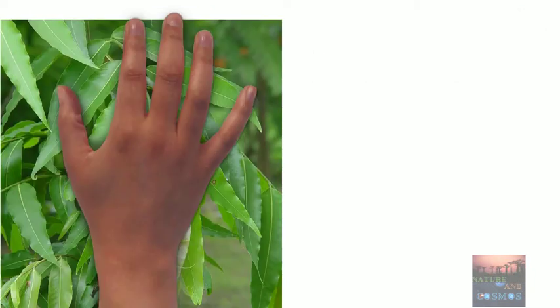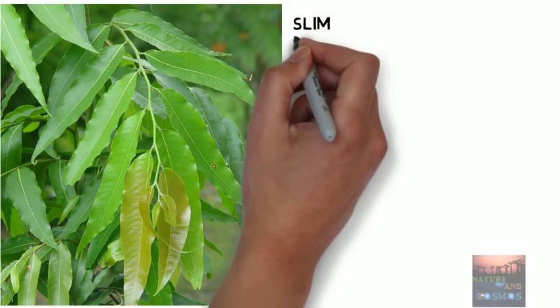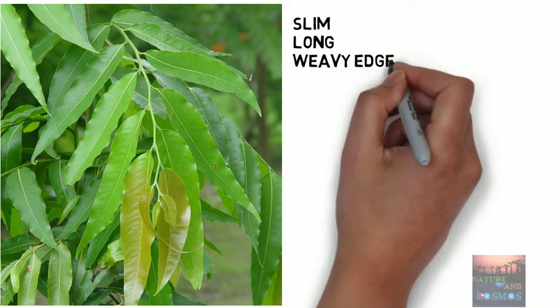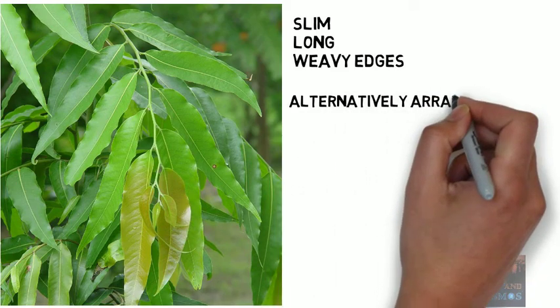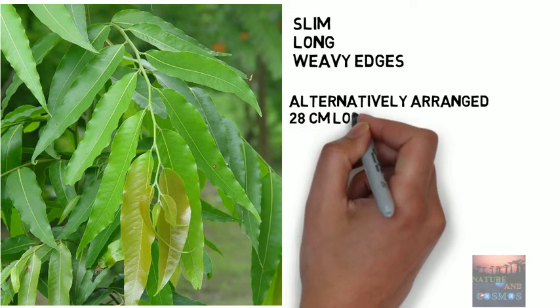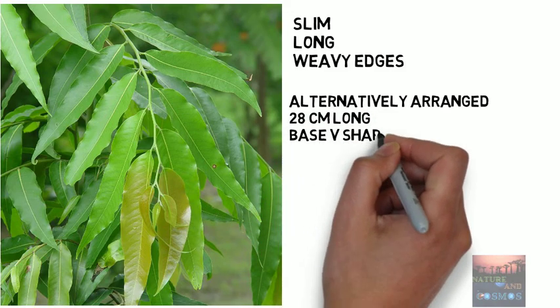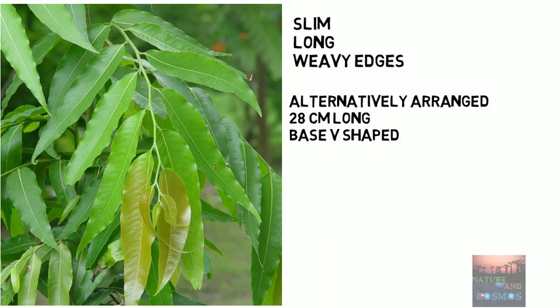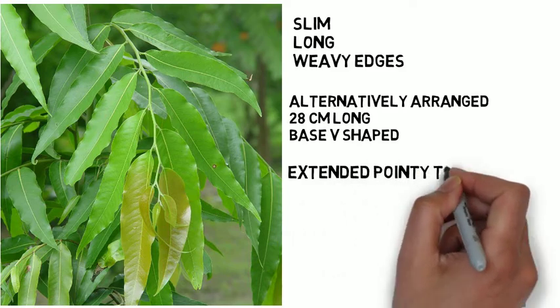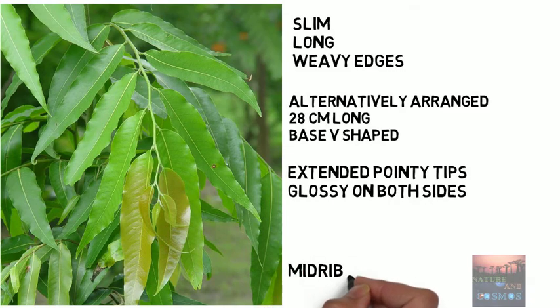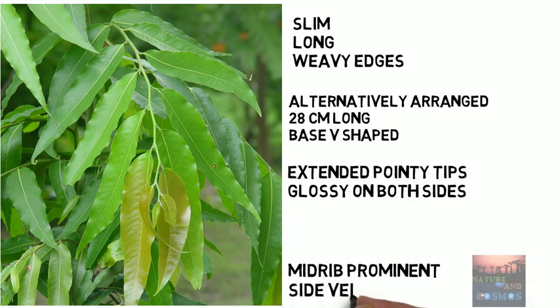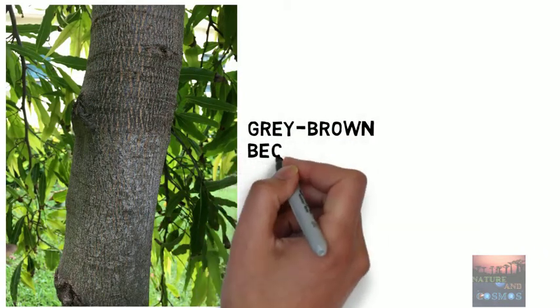The leaves are slim and long with wavy edges and an extended pointed tip. They are glossy on both sides, alternatively arranged with distinctive wavy margins, and have a length of 28 cm. The tip of each leaf is long drawn out and gently tapered, as seen in the picture. The base is broadly V-shaped. If you touch the leaves, you will notice that they are smooth on both surfaces, but slightly glossier above. If you look closely, the midrib is prominent, but the side veins are very vague.